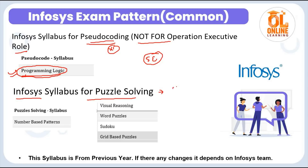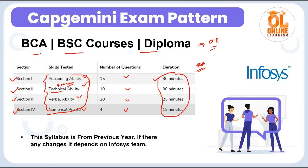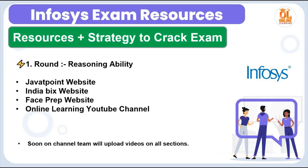The Infosys syllabus for puzzle solving is the same for both Operation Executive and Systems Engineer hiring. The puzzle solving topics include: number-based patterns, word puzzles, Sudoku, and grid-based puzzles. There are only four questions in the puzzle solving section.